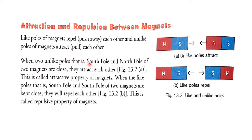When two unlike poles, that is the South Pole and North Pole of two magnets, are kept close, they attract each other. This is called the attractive property of magnets.